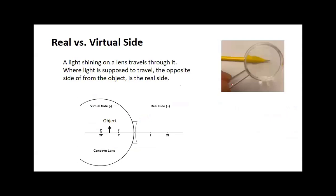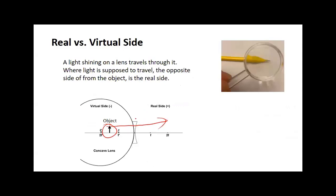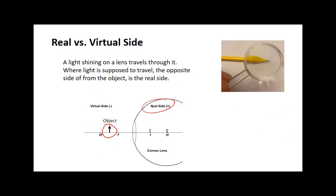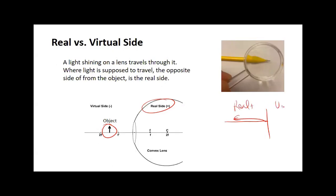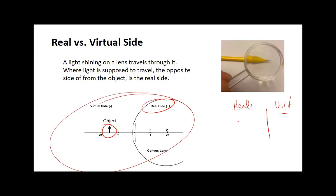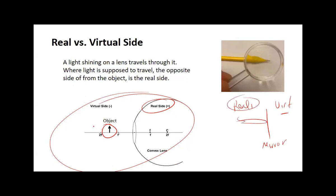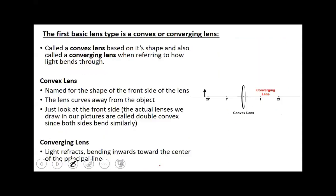The real versus virtual side is different now. When the object's over here, light is supposed to go through a lens, so we switched which way the real versus virtual side is. With mirrors, light is supposed to bounce off and come back — that was the real side. With lenses, light goes through to the real side. Where light is supposed to go is the real side, and that will lead us into more of the math tomorrow.